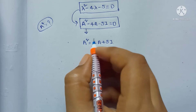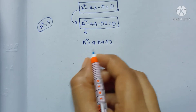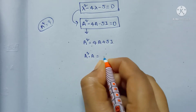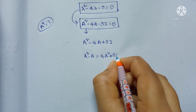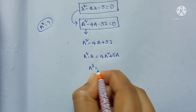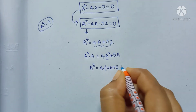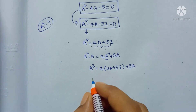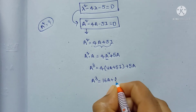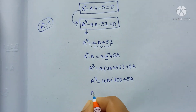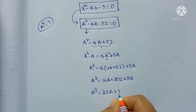By multiplying A squared into both sides we will get A cubed. Multiply both sides with A: A squared into A equals 4A into A, which is A squared, plus 5I into A gives A. And A cubed equals 4 times A squared value, which we know is 4A plus 5I, plus 5A. So A cubed equals 16A plus 20I plus 5A, giving A cubed equal to 21A plus 20I.